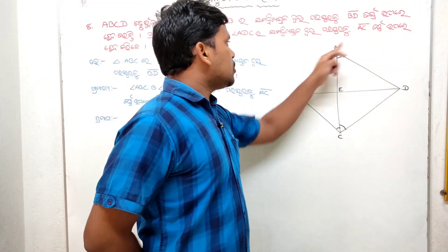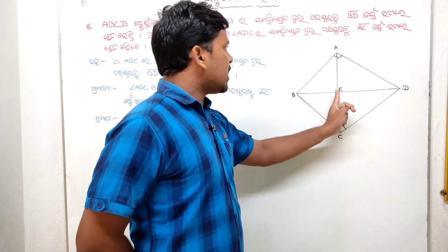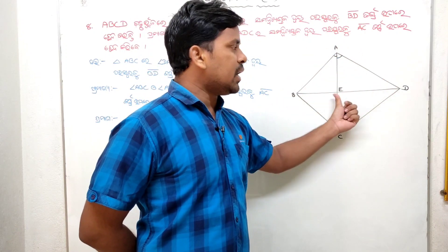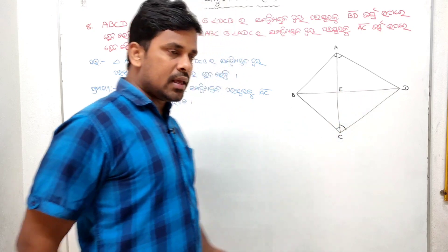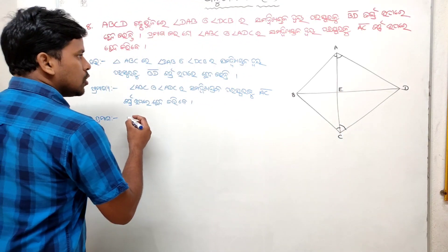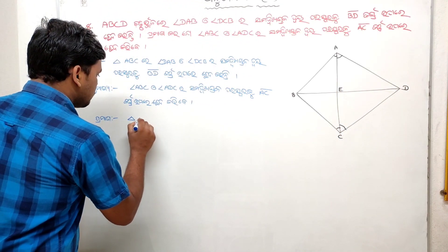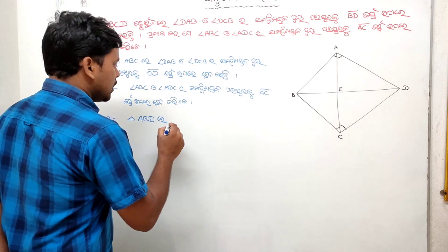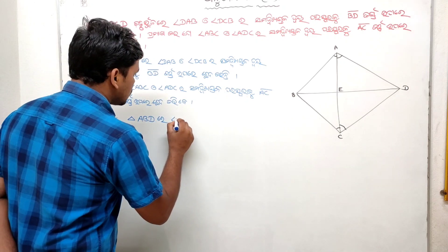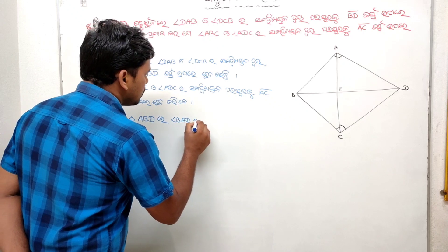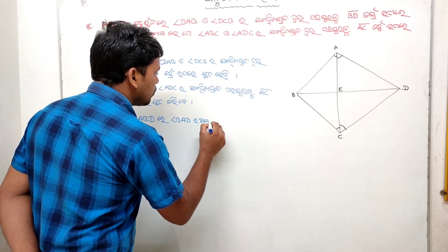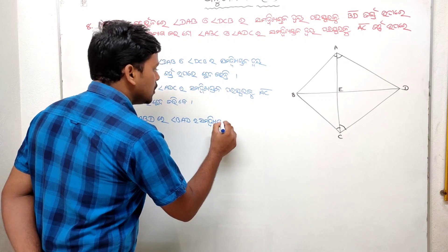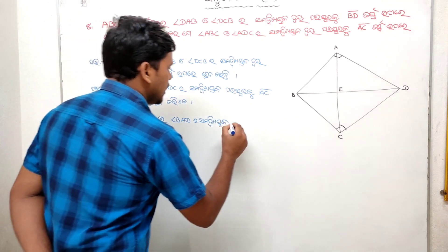If you want to write angle BAD, then the first step is to write point E. We have AB by AD equal to BE by DE. So we write angle BAD.